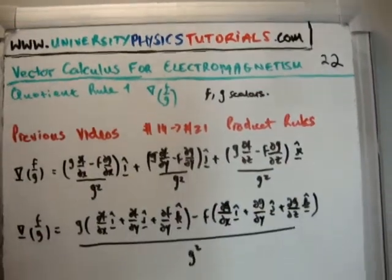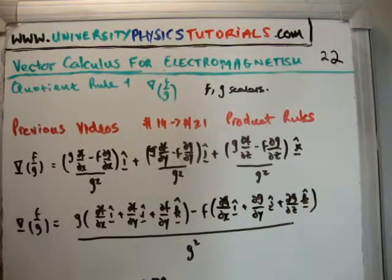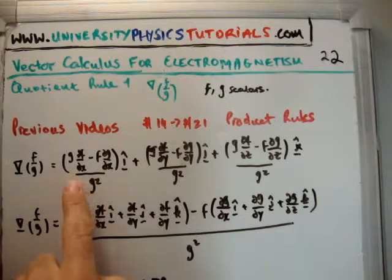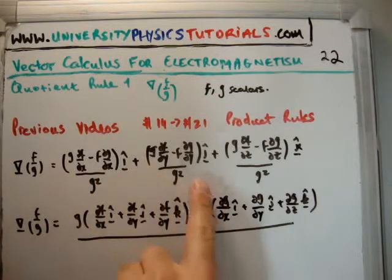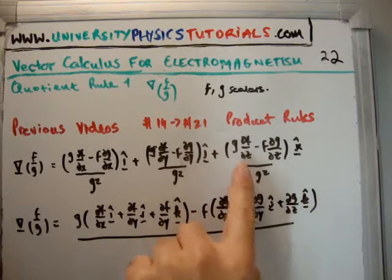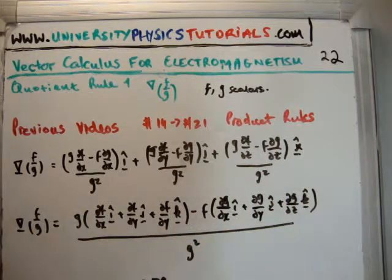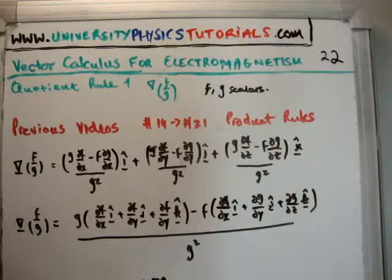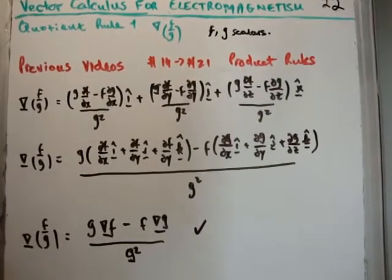Then I'm going to factorize for g and for f. Because we have g del f del x in the i-hat direction, g del f del y in the j-hat direction, and g del f del z in the k-hat direction, all divided by g squared. I'm just going to collect the terms with g pre-multiplied and collect the terms with f pre-multiplied. If you look closely, in actual fact, what we have here is the gradient of each of our functions.